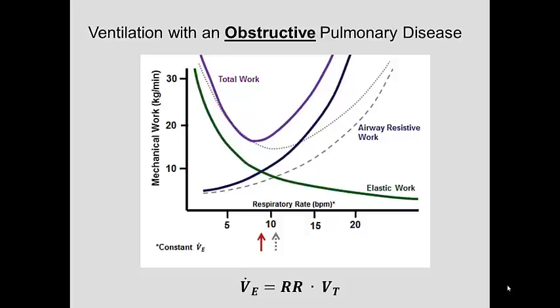And once again, this corresponds with what's usually observed in patients with obstructive pulmonary disease — they tend to ventilate with slower, deeper breaths in order to minimize the work needed to overcome airway resistance.